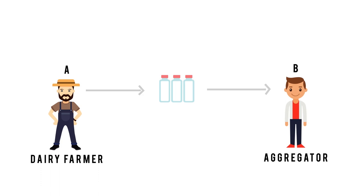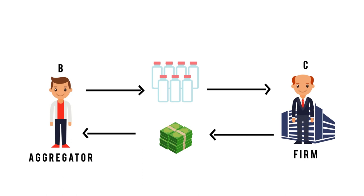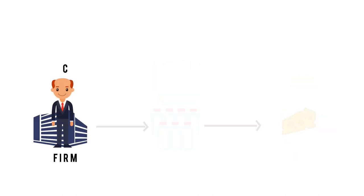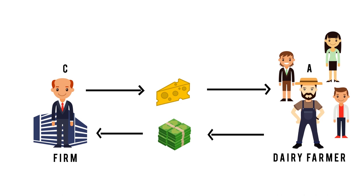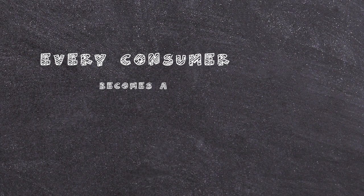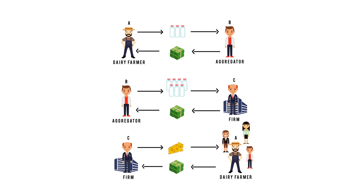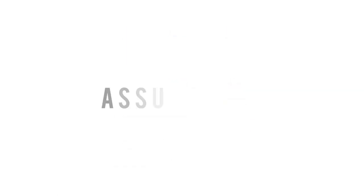Another way to understand circular flow of income is through this example: a dairy farmer A sells milk to person B, who works as an aggregator and forwards it to firm C, which processes it into cheese and sells it back to A and similar people for consumption. The crux of this illustration is that every consumer at some stage becomes a producer, and every producer at some stage becomes a consumer — just like A, B, and C all hold the title of producer at one stage and consumer at another.